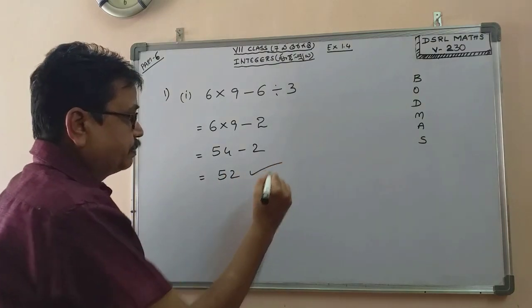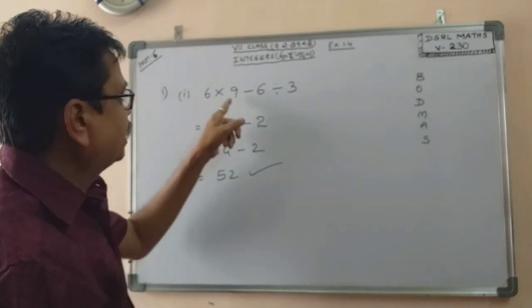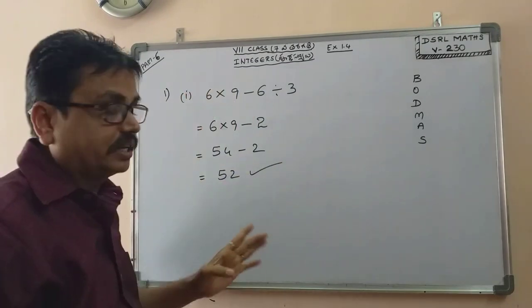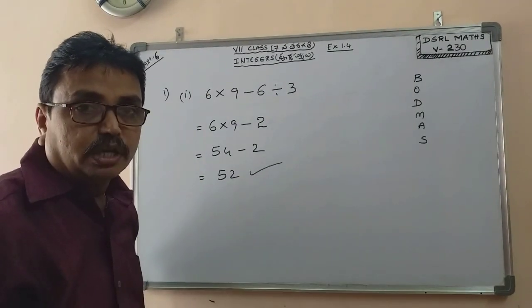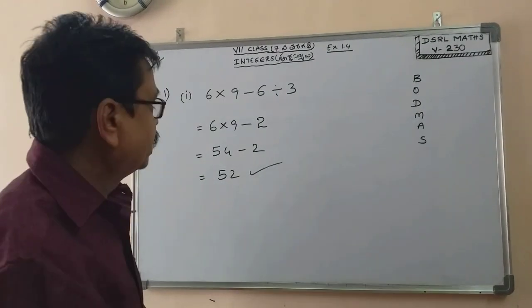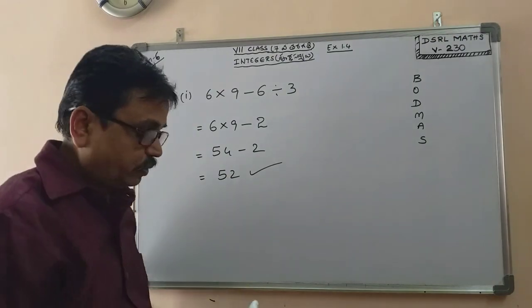Second step: 9 minus 6 is 3, divided by 3 is 1, 1 into 6 is 6. So the answer is 6.